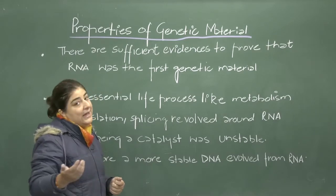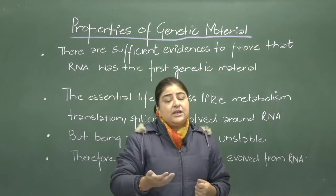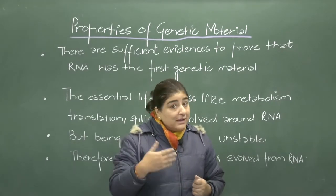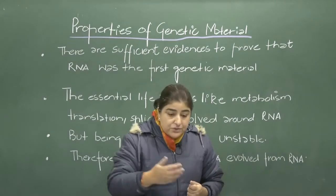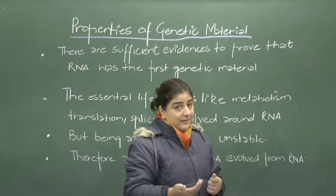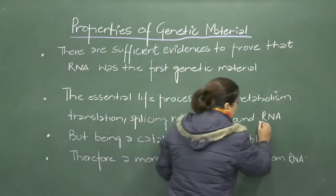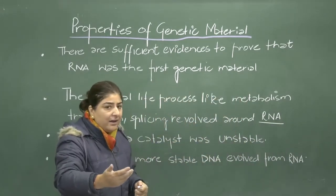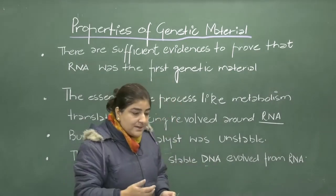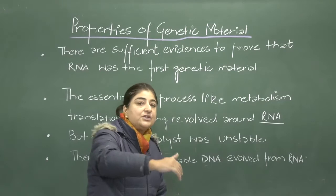RNA is highly unstable because of its structure. In the sugar of RNA, there are two hydroxyl groups at the second and third carbon, which makes it more reactive and unstable. It is also because of the uracil present in it that makes it unstable. After RNA being the first genetic material, as evolution progressed, this RNA got converted into a more stable form known as DNA.